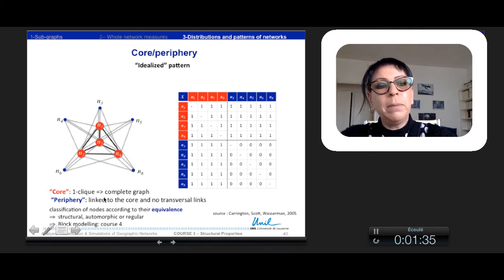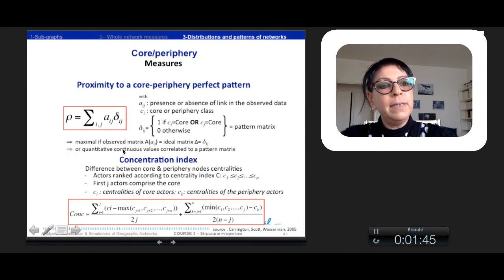But also we can make some measure of this core periphery property. So the first measure is to calculate the proximity between this ideal network that we just see, and so the perfect pattern, and the observed network. So we multiply the observed network here by the ideal one, which is the pattern matrix. And so we can have a maximum index if the observed matrix is very close to the ideal matrix.